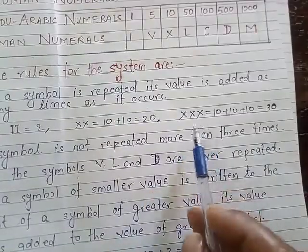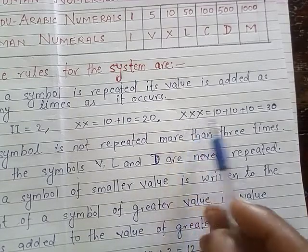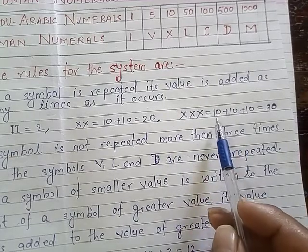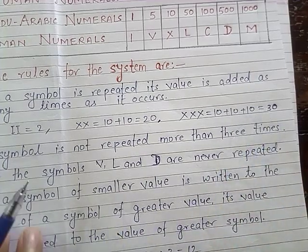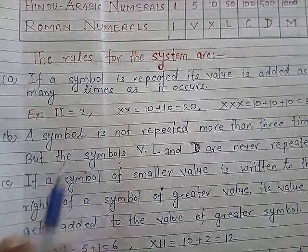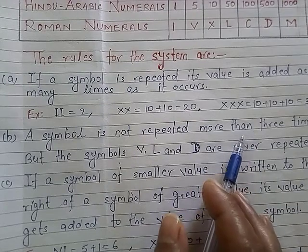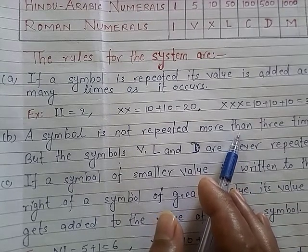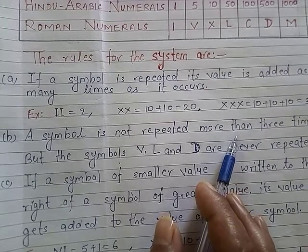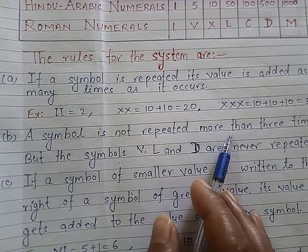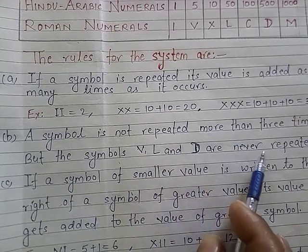X written 3 times means 10 plus 10 plus 10, which equals 30. Rule number 2: a symbol is not repeated more than 3 times — you can repeat a symbol only 3 or fewer times. However, the symbols V, L, and D are never repeated.